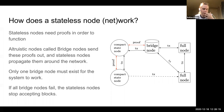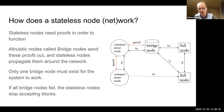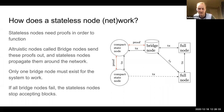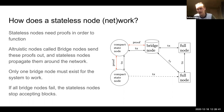Only one bridge node really needs to exist for the whole system to work. Even if every bridge node fails at the same time, stateless nodes will simply stop accepting new blocks for a little bit — they won't do anything crazy like accepting an invalid block.